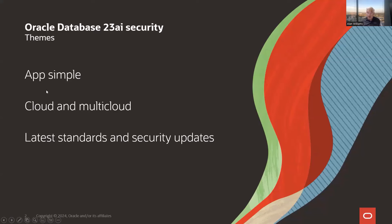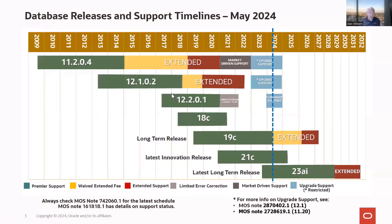This is part of My Oracle Support Note 742060.1, which contains questions about support timelines for database releases. Long-term releases like 11204, 19C, and 23 will have five years of premier support with additional extended support. Innovation releases like 21C and 18C are much shorter-lived with no extended release. With 21C, you've got about another year of premier support, and we anticipate customers migrating from 19C to 23AI.